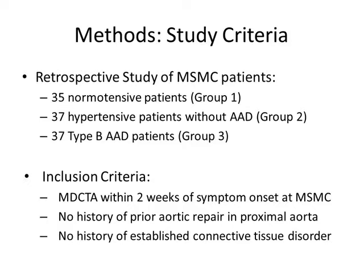We identified normotensive patients, hypertensive patients without AAD, and type B AAD patients who met the following inclusion criteria: they received a multi-detector CTA within two weeks of symptom onset, they had no history of prior aortic repair in the proximal aorta, and they had no history of established connective tissue disorder.